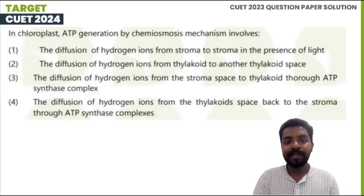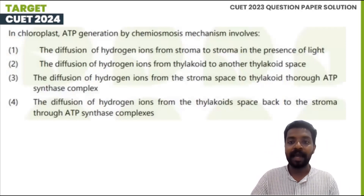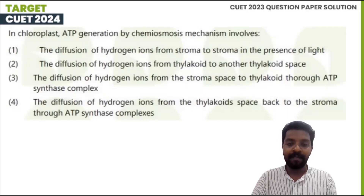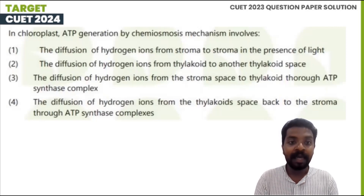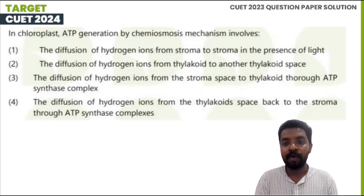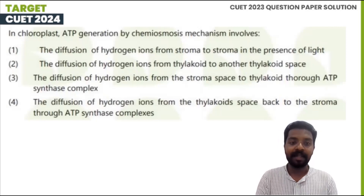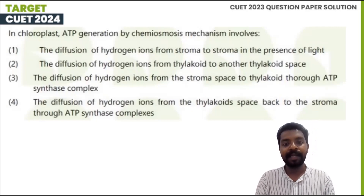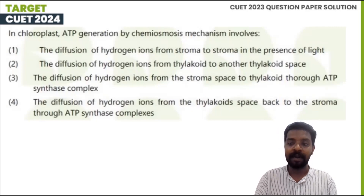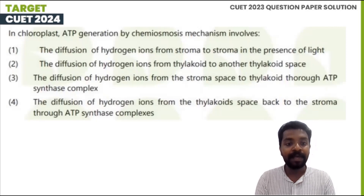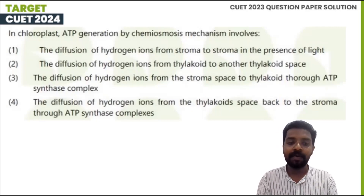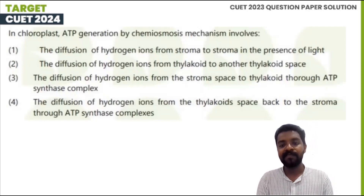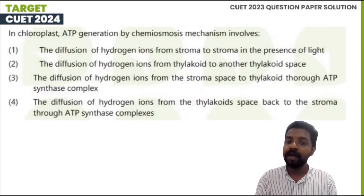In chloroplast, ATP generation by chemiosmosis mechanism. The question involves chloroplast ATP generation by chemiosmosis. The options are: diffusion of hydrogen ions from stroma to stroma in the presence of light; diffusion of hydrogen ions from thylakoid to another thylakoid space; diffusion of hydrogen ions from stroma to thylakoid through ATP synthase complex; diffusion of hydrogen ions from thylakoid space back to stroma through ATP synthase complex.